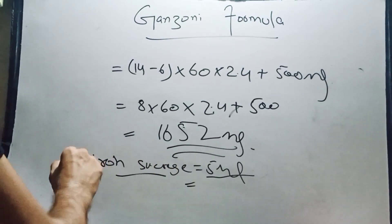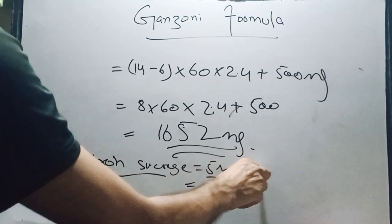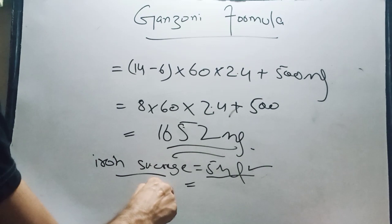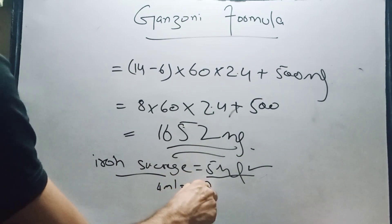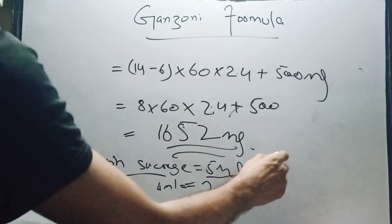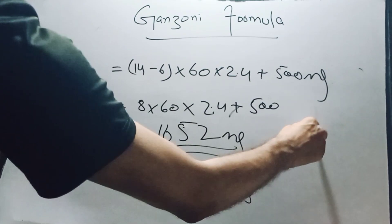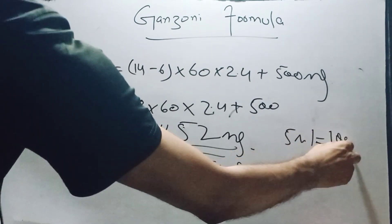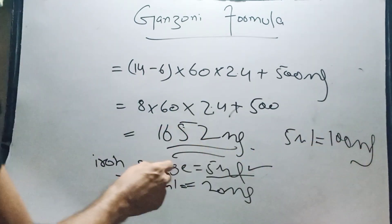Usually iron sacrose comes in 5 ml vials with each 1 ml containing 20 mg of iron, so each 5 ml vial contains 100 mg of parenteral iron. This patient needing 1652 mg will need 16 vials of iron sacrose.